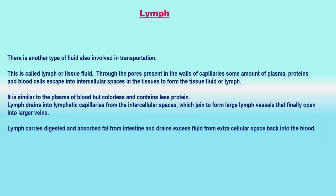Lymph: There is another type of fluid also involved in transportation, called lymph or tissue fluid. Through the pores present in the walls of capillaries, some amount of plasma, proteins, and blood cells escape into intercellular spaces in the tissues to form the tissue fluid or lymph. It is similar to the plasma of blood but colorless and contains less protein. Lymph drains into lymphatic capillaries from the intercellular spaces, which join to form large lymph vessels that finally open into larger veins. Lymph carries digested and absorbed fat from the intestine and drains excess fluid from extracellular space back into the blood.